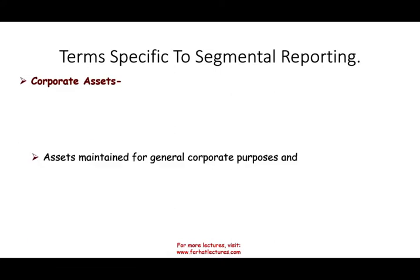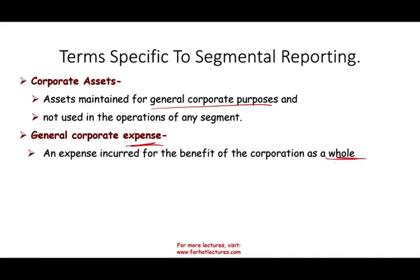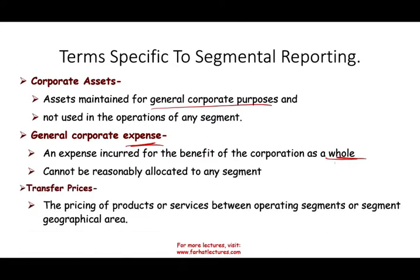Other terms to know: corporate assets are those maintained for general corporate purposes and not used in any segment's operation — like the headquarters building, HR building, or payroll. General corporate expenses are expenses incurred for the benefit of the corporation as a whole that cannot reasonably be allocated to any segment. Transfer prices are the prices charged for products or services between operating segments or geographical areas — for example, if the North America division sells to the South American division, the amount charged is a transfer price because it's within the same company.